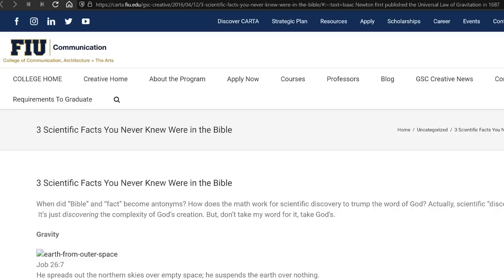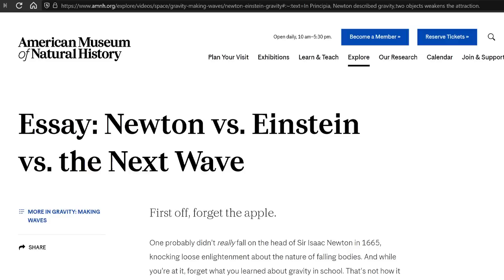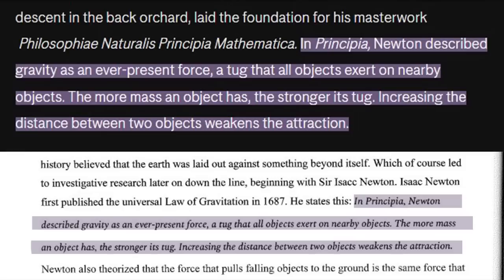Instead, it's ripped directly from an article on Florida International University's website. He also provides a quote which he attributes to Isaac Newton: 'In Principia, Newton described gravity as an ever-present force, a tug that all objects exert on nearby objects. The more mass an object has, the stronger its tug. Increasing the distance between two objects weakens the attraction.' Now, that might sound like an odd thing for Isaac Newton to say about himself — did he have a habit of speaking about himself in the third person, in the past tense, and in 21st century English? The quote is stolen from an American Museum of Natural History article about Newton. Obviously he didn't say that, and yet for some unfathomable reason, Almondo attributed it to him.